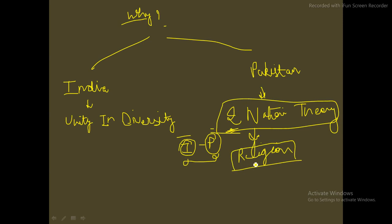This two-nation theory has been proven wrong when Pakistan and Bangladesh separated. East Pakistan became Bangladesh, and India played a major role in providing independence to Bangladesh. Even though both East and West Pakistan were Islamic countries, they still separated — disproving the theory that religion alone can bind a nation.